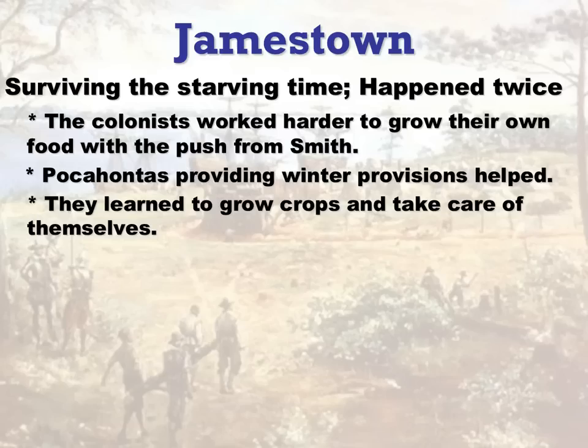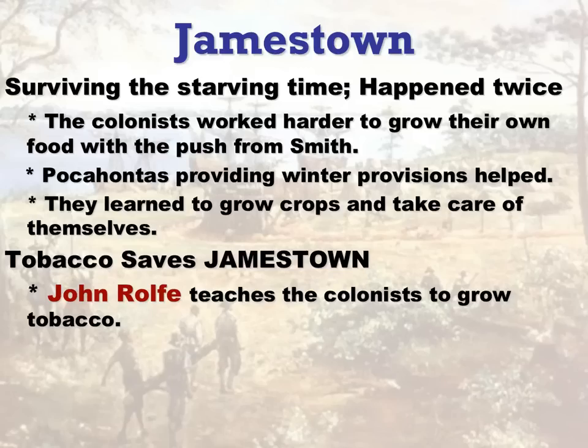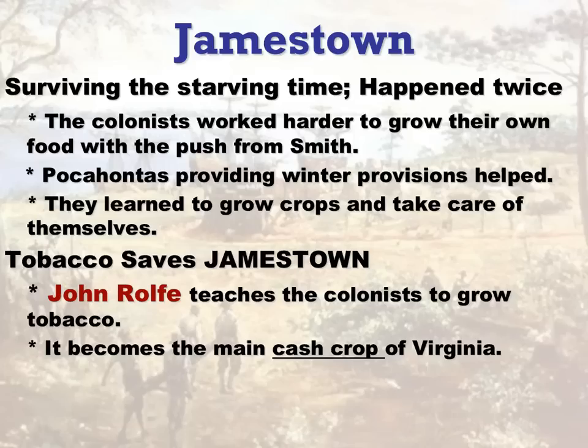Tobacco is what really saves Jamestown. They grew crops and food to eat, but it would be tobacco that would change the tide in America. It made the New World a valuable commodity, and John Rolfe is the man who brings it. He is the one who marries Pocahontas when she is 19, and he really makes America a viable place through the concept of tobacco. It becomes the main cash crop of Virginia, and almost overnight it just booms and explodes into this amazing place that everybody wants to be a part of.